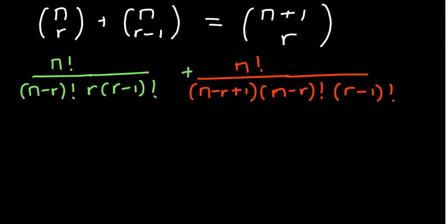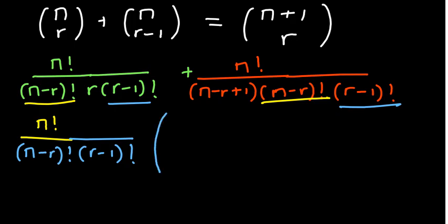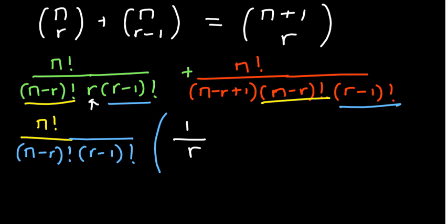At this point we can factorize common terms. On top, n factorial is common. On the bottom, n minus r factorial and r minus 1 factorial are both common. After factorizing, what remains in the bracket for the first part is 1 over r, and for the second part is 1 over n minus r plus 1.